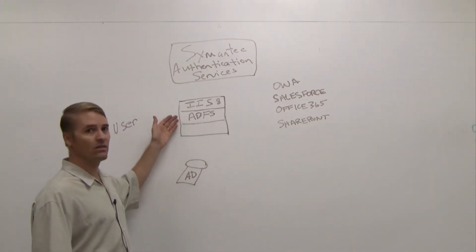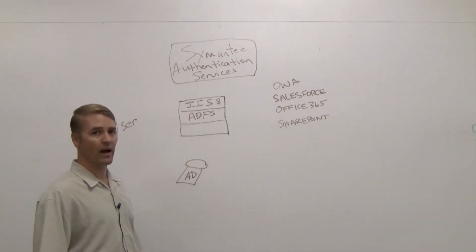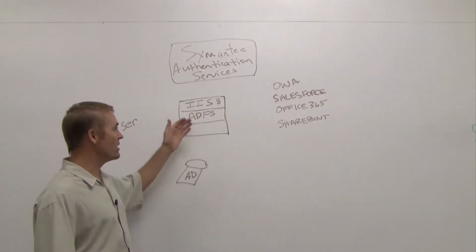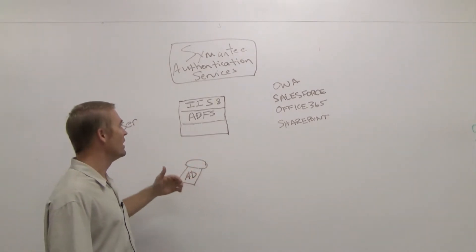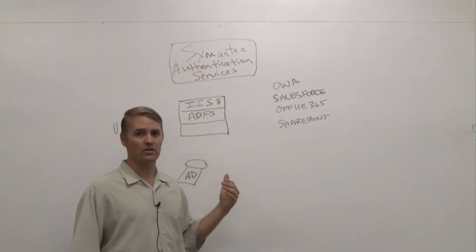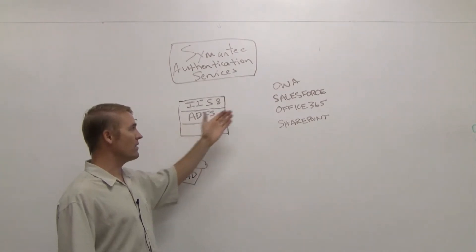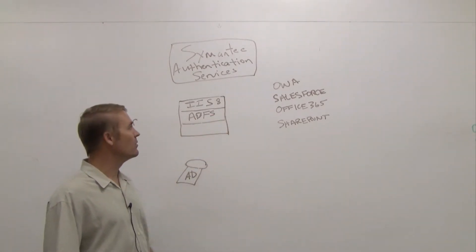Once ADFS is installed, and a prerequisite would be IIS 7 or 8 for ADFS, it would need to be added to one or more reliant parties. You define a reliant party rule or trust arrangement between ADFS and reliant parties.